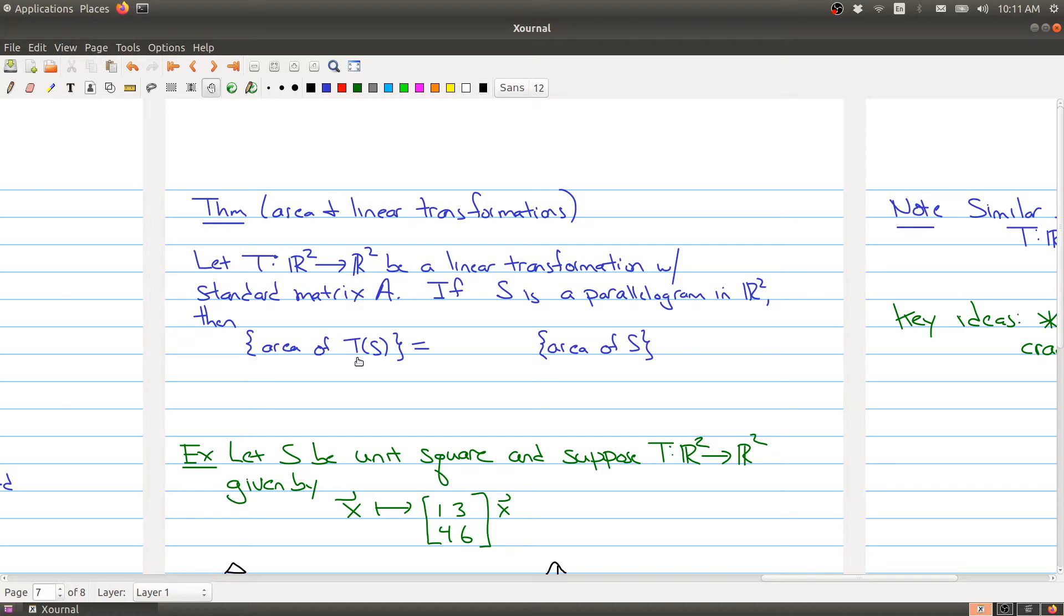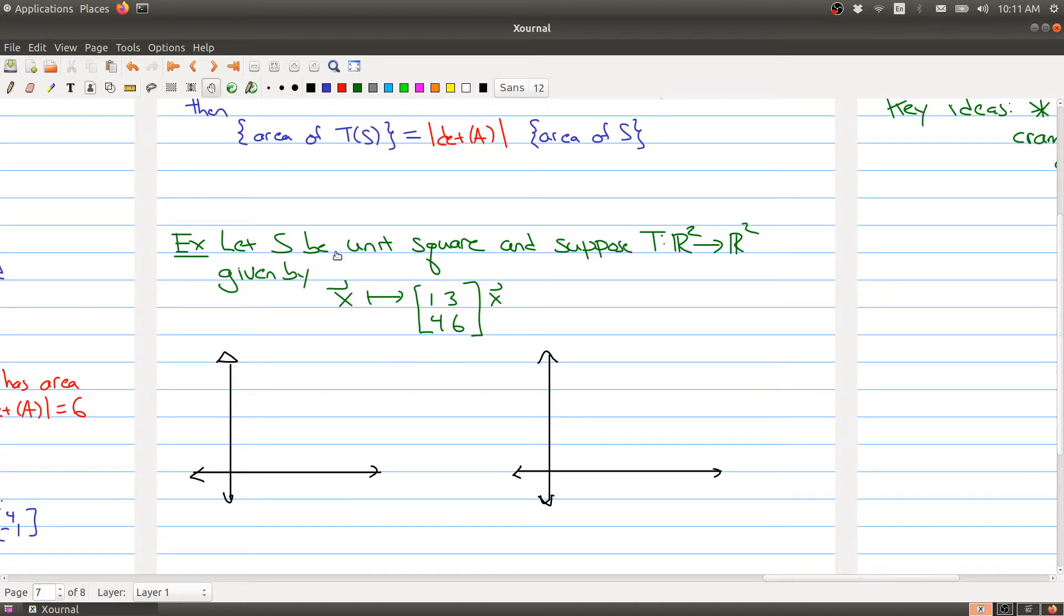Then the area of the object you get on the other side compared to the area of the object that you started with are related. And in particular, they're related by the absolute value of the determinant of A. So the A here being the standard matrix. So again, let me give you an example of this. So we're starting with a unit square. So let me draw my unit square right here. There we go. This will be my unit square. And this is the point 1, 0. And this is the point 0, 1. And what we want to do is stick every point in the red box into my function, which is given by multiplying that point by the matrix 1, 3, 4, 6. And then look at what happens on the other side.